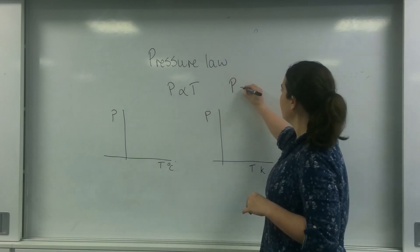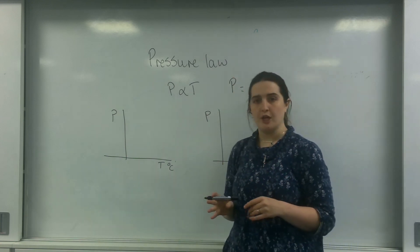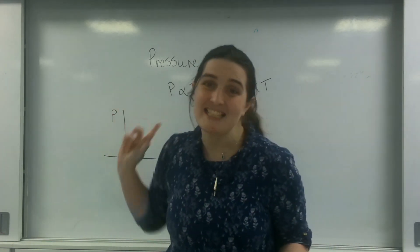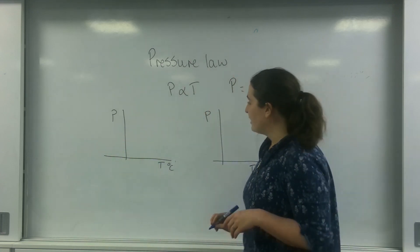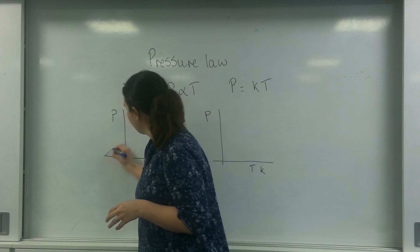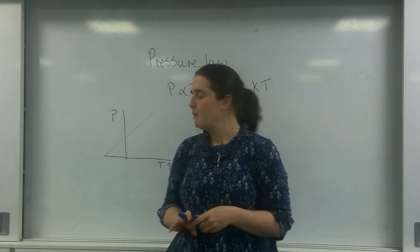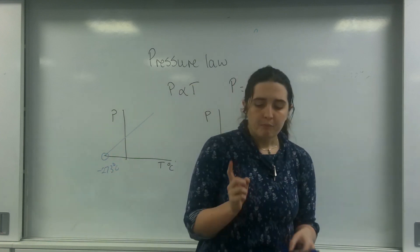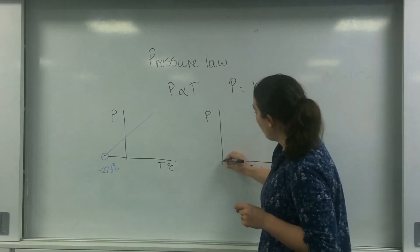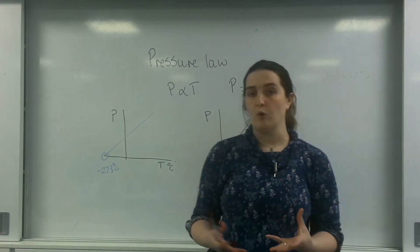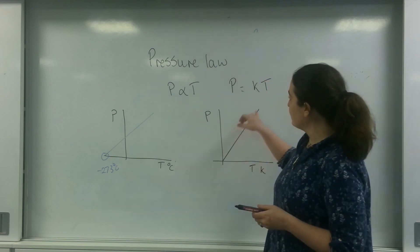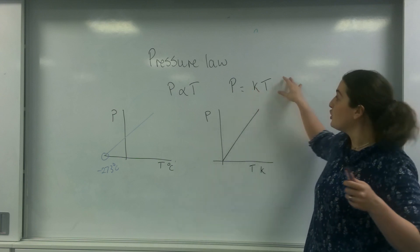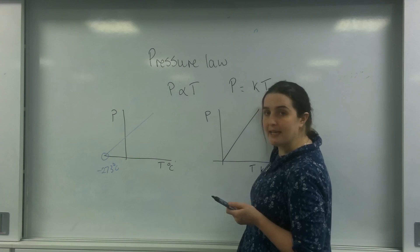So pressure equals a constant times the temperature. Now in my previous video about Charles' Law I talked about a problem with degrees C — it's exactly the same problem here. If you have it in degrees C, you end up with a graph that ends here at minus 270 degrees C. But if you plot it with Kelvin, you get a directly proportional line. This means that if you're going to use this formula — a directly proportional straight line graph with no intercept — the temperature must be in Kelvin.